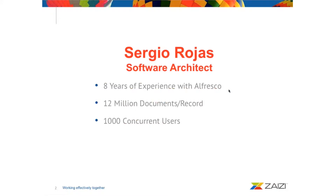My name is Sergio Rogers. I currently work as a software architect. I've been working here nearly three years, however I started working with Alfresco eight years ago. I've been participating in many different kinds of projects from small to big, and currently we are working on a project with some 12 million document records and 1,000 concurrent users. In this project we are using Nginx because performance is quite important, so as you can tell we've got some experience already using Nginx and we can share some tricks here.